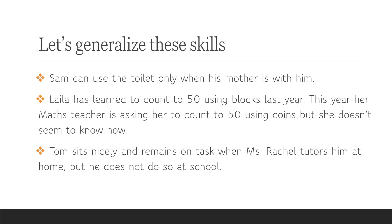Let's try to generalize the skills in our previous examples. Sam can use the toilet only when his mother is with him. Sam needs to generalize the behavior of using the toilet across different people — so he needs to use the toilet when his father is around, when his teacher is around, or even his nanny. Since he has learned to use the toilet at home, he also needs to generalize the skill across different settings: at a restaurant, at school, or at a relative's house. He also needs to maintain that skill over time.